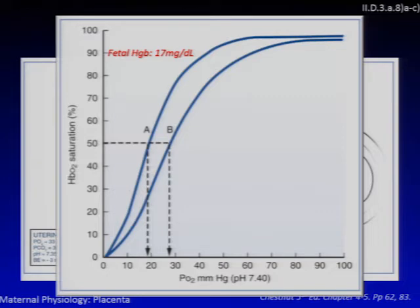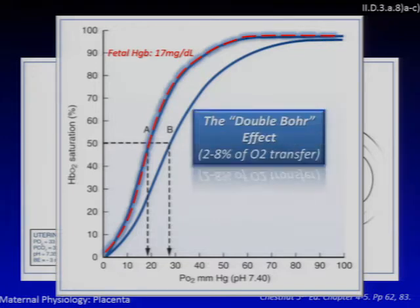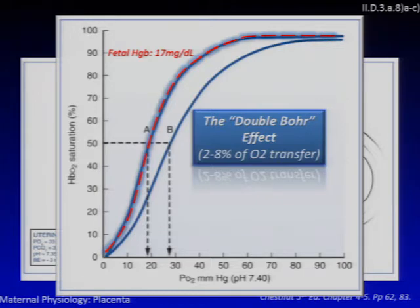Fetal hemoglobin concentration is high at 17 mg/dL, accounting for large O2 content and net delivery of large quantities of O2 to the fetus. Fetal hemoglobin also has a higher affinity for O2 and a lower P50 than maternal hemoglobin, producing a sink effect that enhances O2 uptake. The Bohr effect also augments O2 transfer across the placenta — fetal-to-maternal transfer of CO2 makes maternal blood more acidic and fetal blood more alkalotic, further enhancing maternal-to-fetal O2 transfer in what is called the double Bohr effect, accounting for 2 to 8% of transplacental O2 transfer.